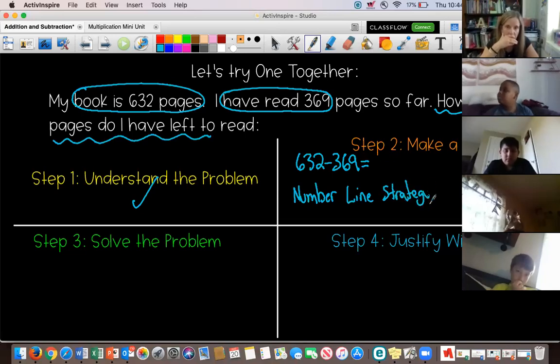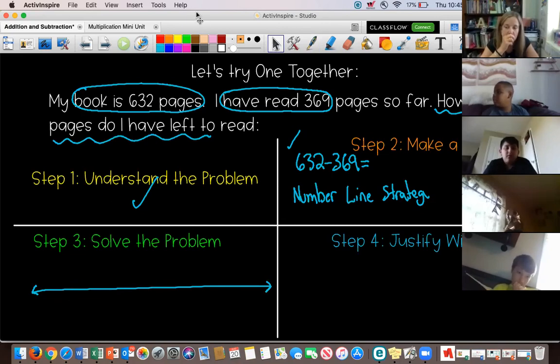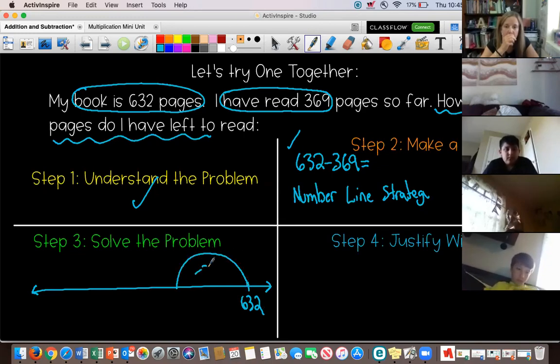All right. So, then I've done step two. Now, I'm going to go down to step three, and I'm going to solve the problem. So, I'm going to draw my number line. I'm going to have to try to move my little thing, my document, up to the top here real quick. Okay. So, now I'm going to start at 632, and I've got to go back a little bit by a little bit on jumps. What's the first jump I'm going to make? Anybody can unmute themselves and tell me. In this problem, what's the first jump I'm going to make? 300. So, I can go back 300, and that's going to put me at 332.